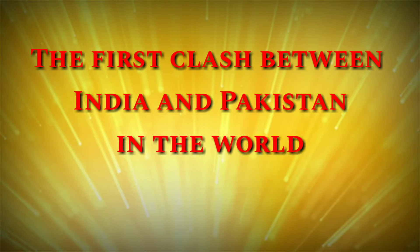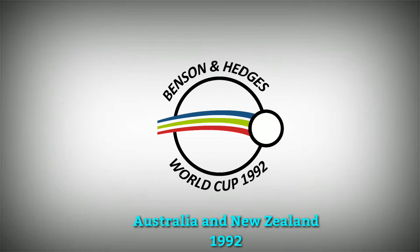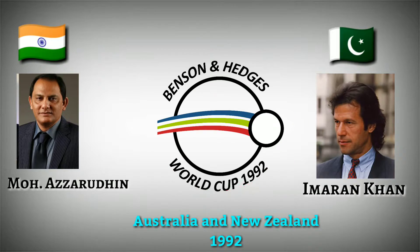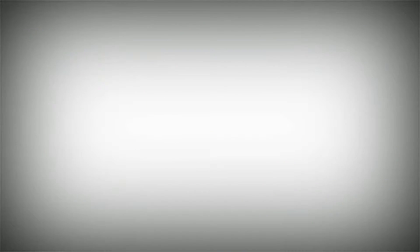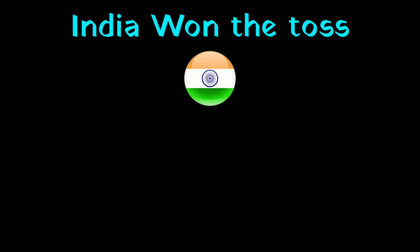The first clash between India and Pakistan in the World Cup was in the 1992 World Cup. It was on 4th March 1992 at Sydney Cricket Ground, Sydney, Australia. India won the toss and elected to bat first.